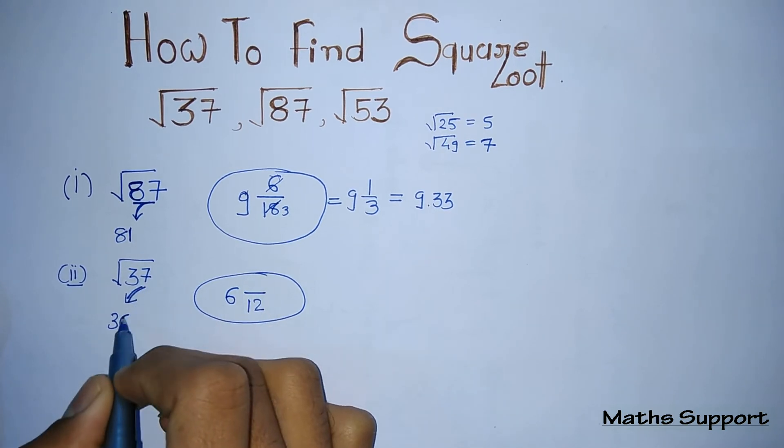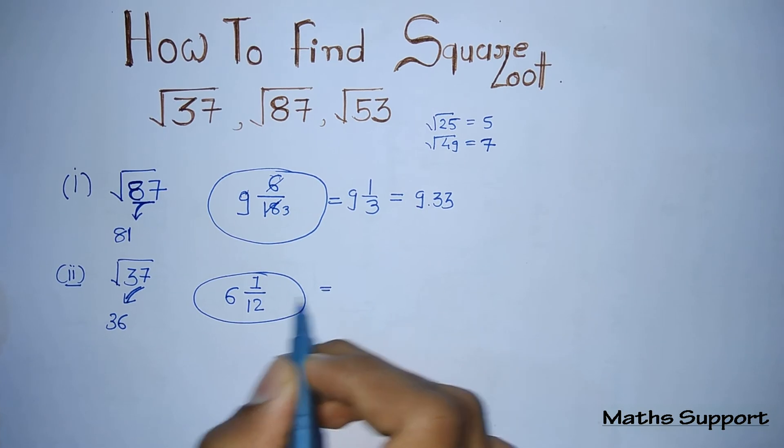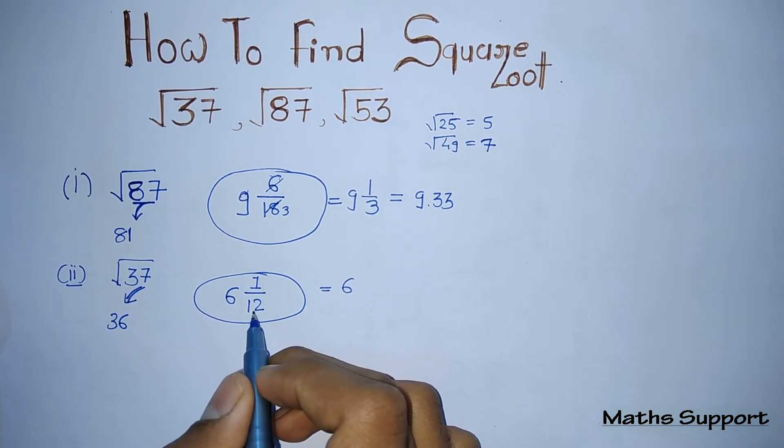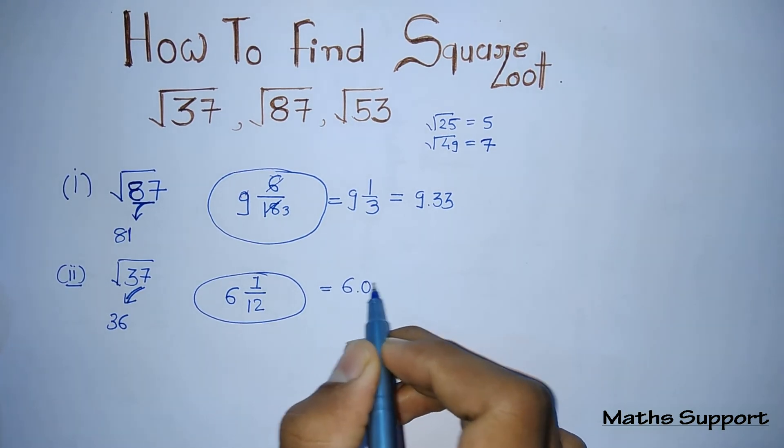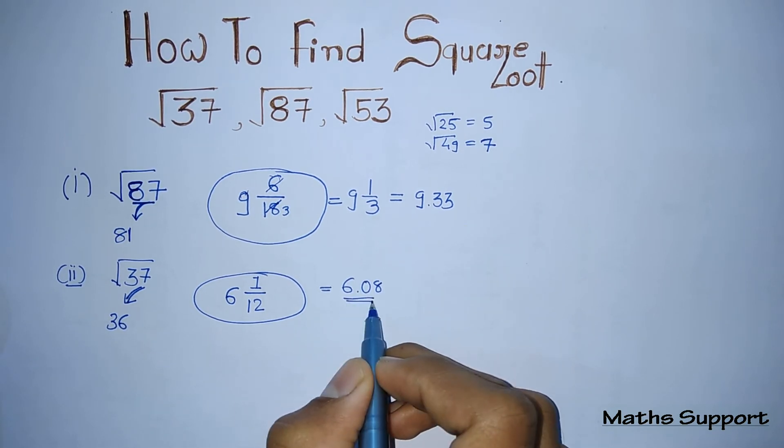For the numerator, put the difference of these two, that is 1. We know that 6 and 1/12—1/12 can be written as 0.08. So this is your final answer: 6.08.